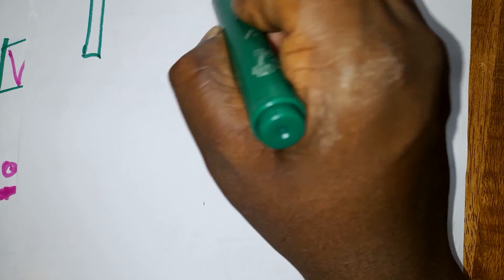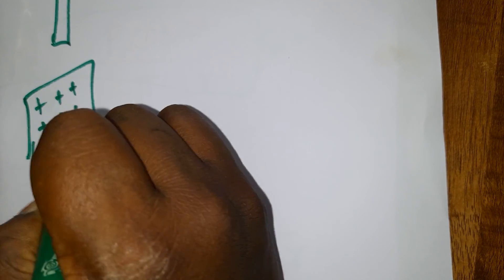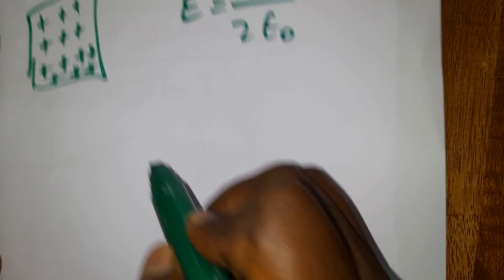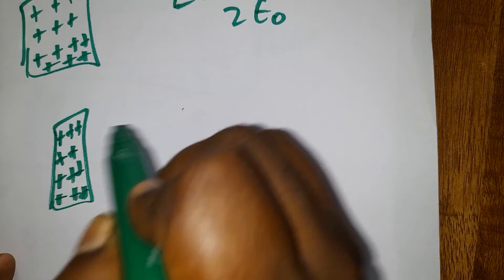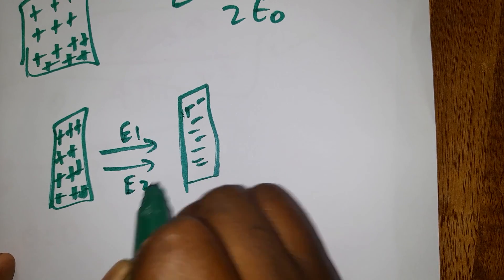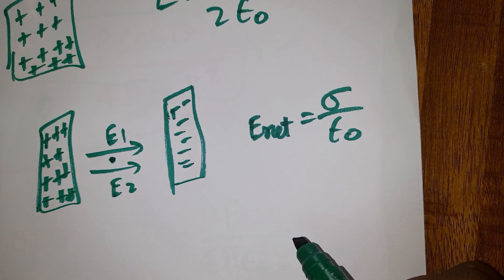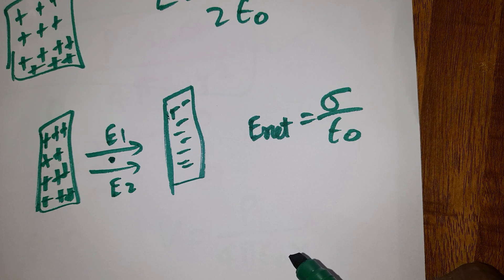Applications of Gauss's law: For a long straight wire, E = λ/(2πε₀r). For a sheet, E = σ/(2ε₀). For two parallel plates (one positive, one negative), the electric fields E1 and E2 are in the same direction at the center, so E_net = σ/ε₀. Thank you for watching — all formulas from chapters 1 and 2 are covered, which will be very helpful for your board exam.